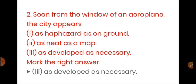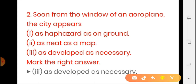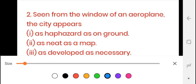The second question is: how does the city appear when seen from the window of an aeroplane? When you are travelling in an aeroplane — you are in the air — what kind of view do you get of the city? How does it look? The first option is 'as haphazard as on the ground' — does the city look the same as it does from the ground? The answer is no, when we are in the air, the city does not appear that way.